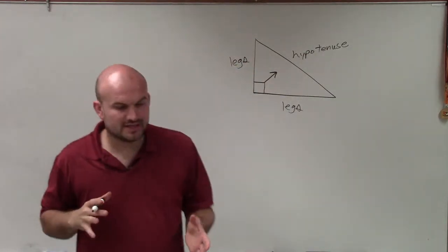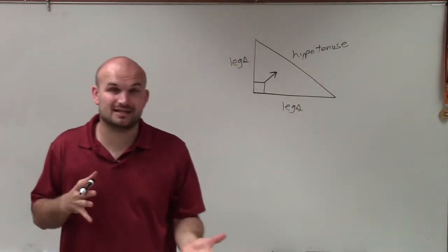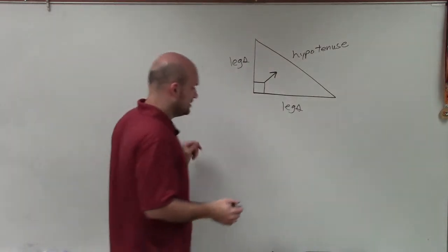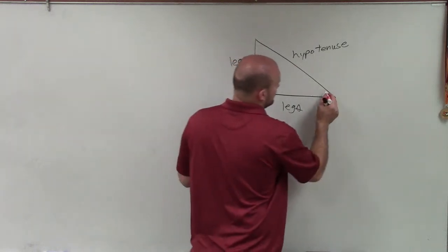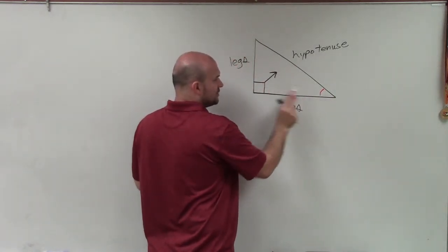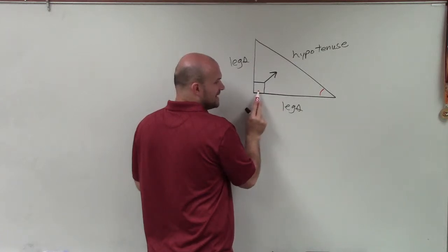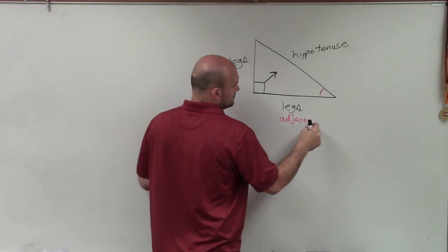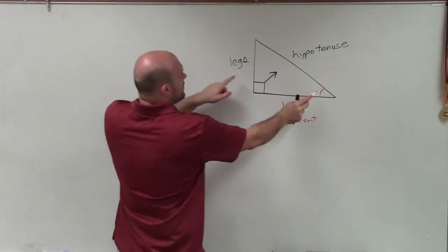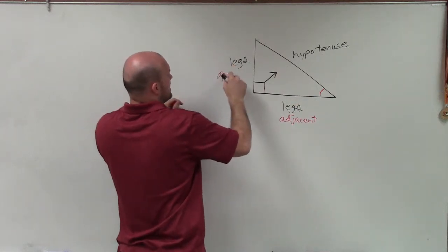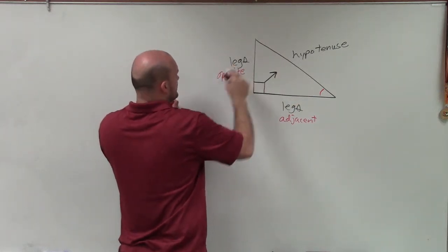Now, we can get a little further into how to differentiate between the legs, depending on what angle we're talking about. So if I'm talking about this angle right here, between the angle and your 90 degree angle is what we call the adjacent side. From the angle directly across from the angle, we call that the opposite side.